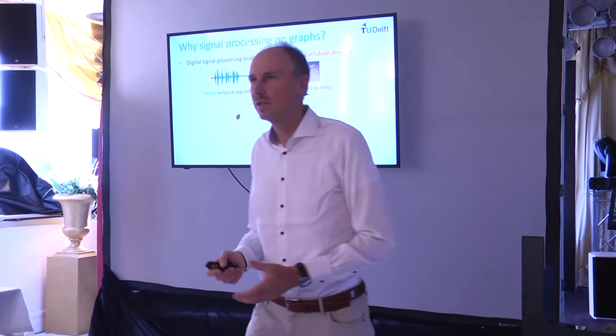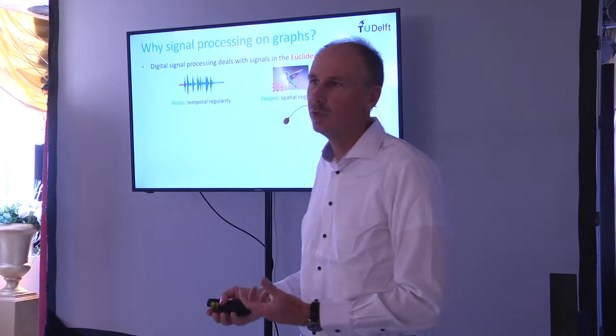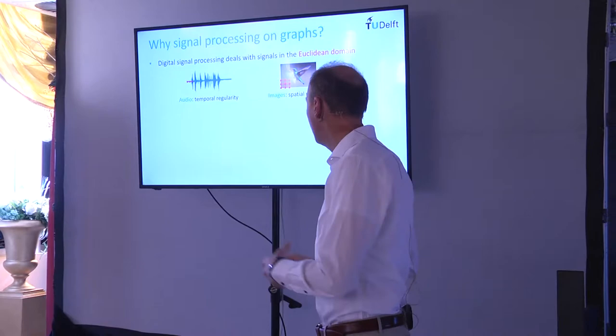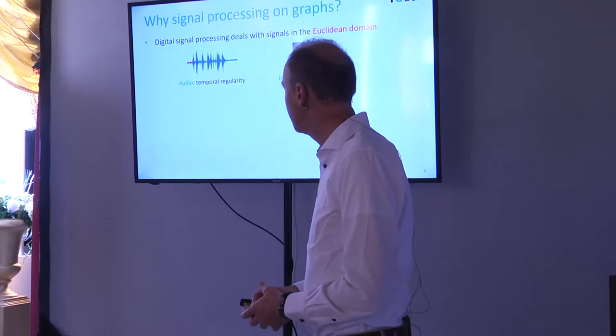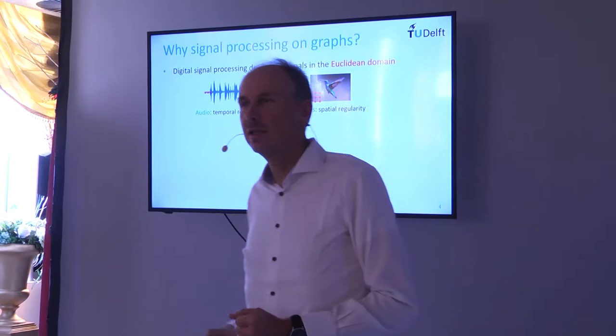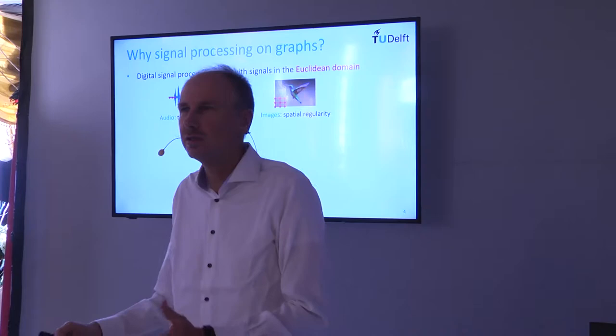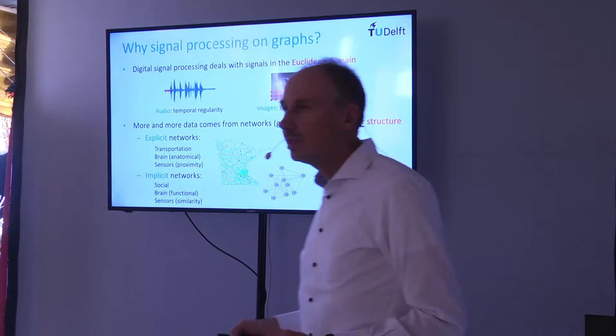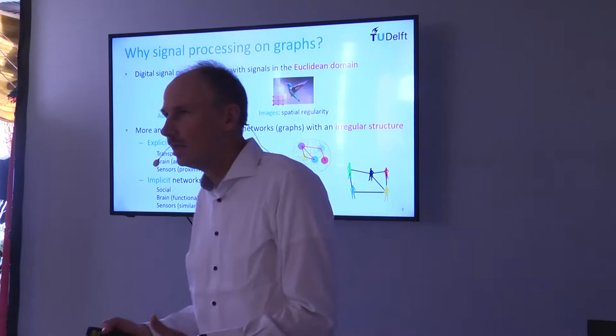Why do we need machine learning or signal processing on graphs? Classical signal processing deals with regular signals in the Euclidean domain — audio signals, images, video — where we have clear notions of proximity like top, bottom, left, right, past, future. But more and more data today comes from networks characterized by graphs, which have a very irregular structure.